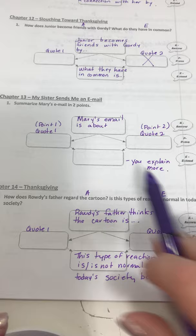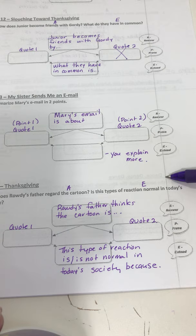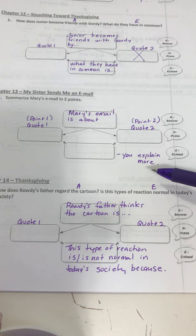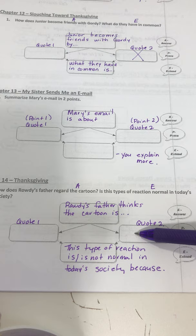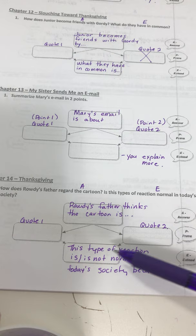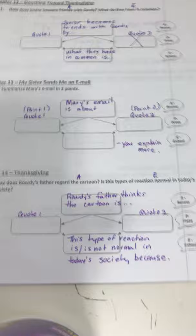Chapter 14, Thanksgiving: How does Rowdy's father regard the cartoon? Is this type of reaction normal in today's society? We have two questions — the first answers the A part, the second is your extension with your proof or quotes in the middle. 'Rowdy's father thinks the cartoon is blank' — include two quotes if you can. Then: 'This type of reaction is or is not normal in today's society, because...' You fill that in.